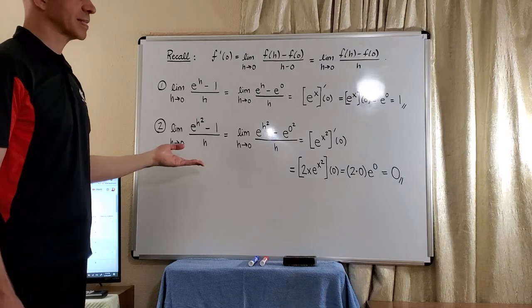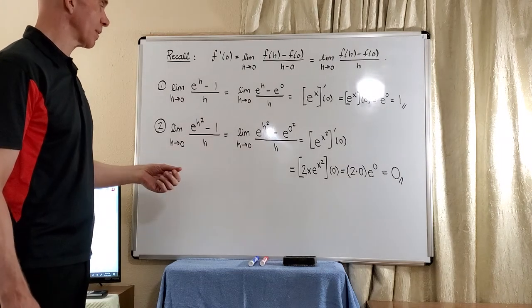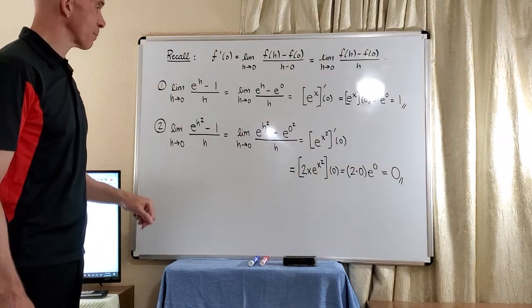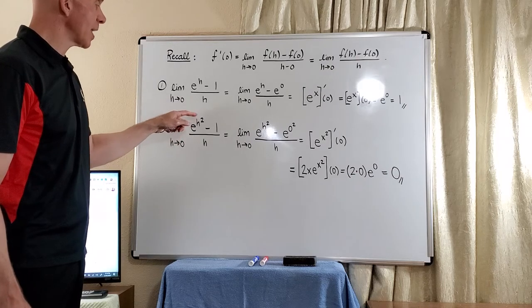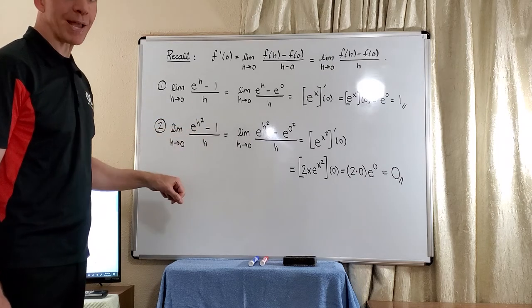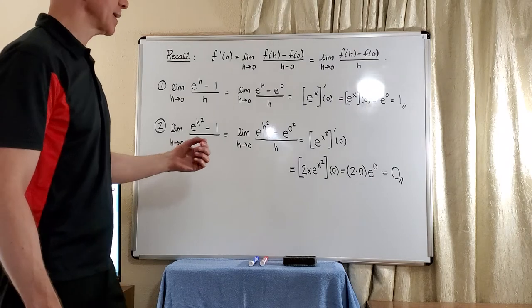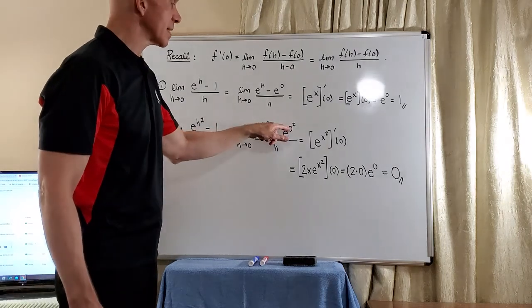Now, in the second problem, it's likewise a definition of derivative. You have the limit as h approaches 0 of e to the h squared minus 1 divided by h. Well, we do the same thing again. We just write 1 as e to the 0 squared.